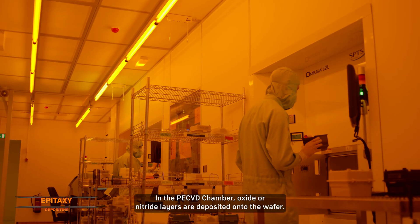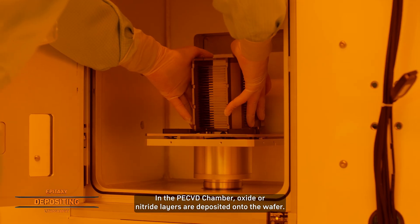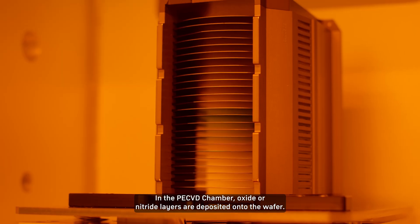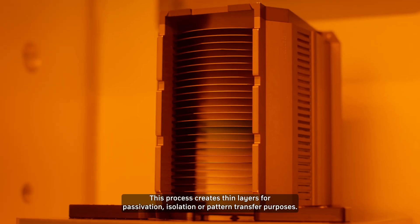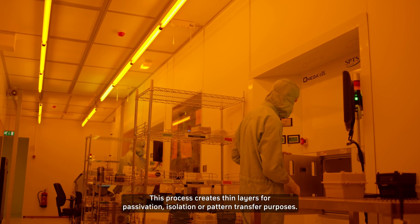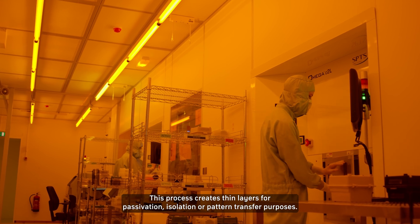In the PECVD chamber, oxide or nitride layers are deposited onto the wafer. This process creates thin layers for passivation, isolation or pattern transfer purposes.